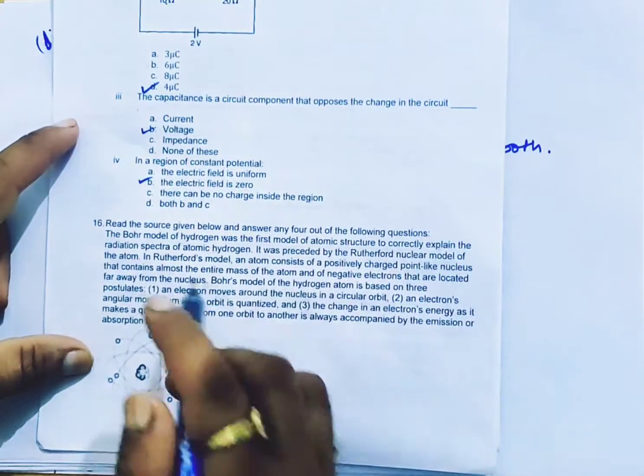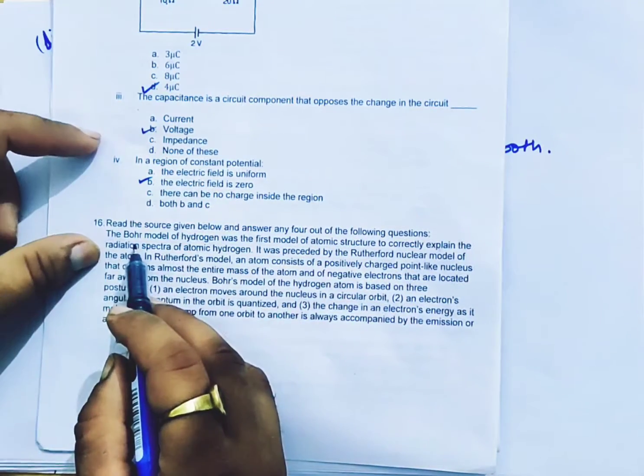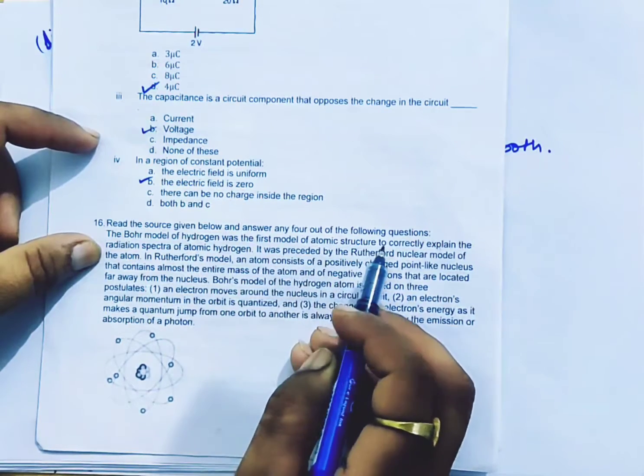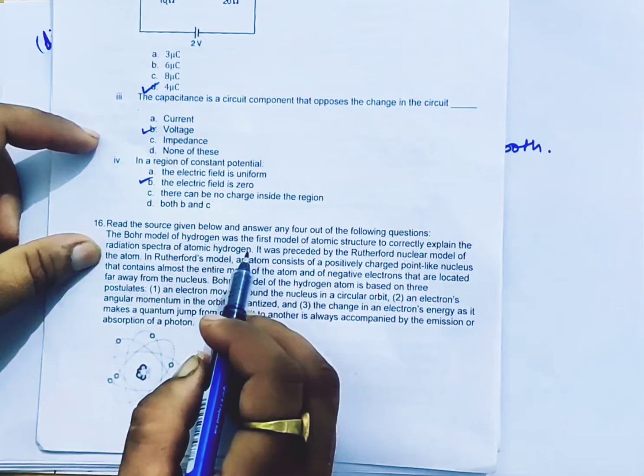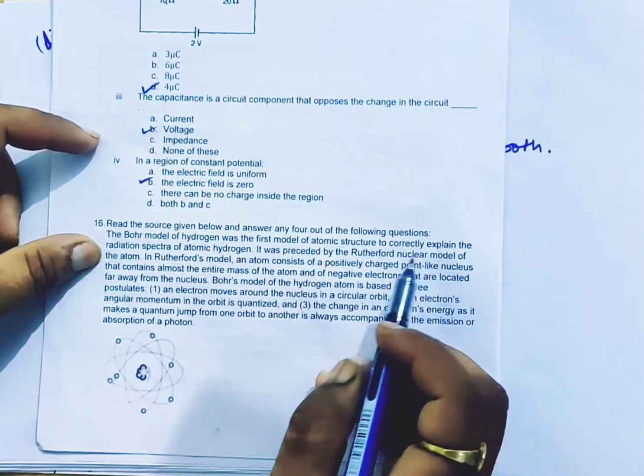Read the source given below and answer any four out of the following questions. The Bohr model of hydrogen was the first model of atomic structure to correctly explain the radiation spectra of atomic hydrogen. It was preceded by the Rutherford nuclear model of atom.